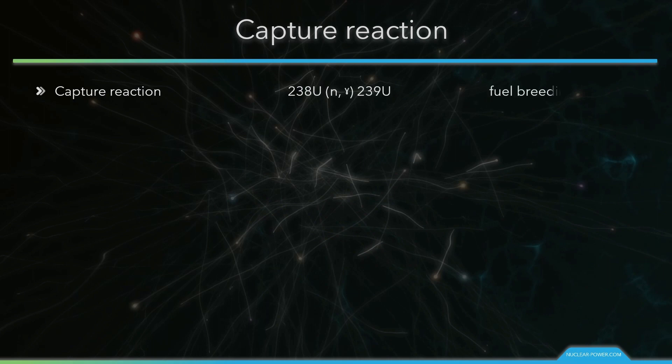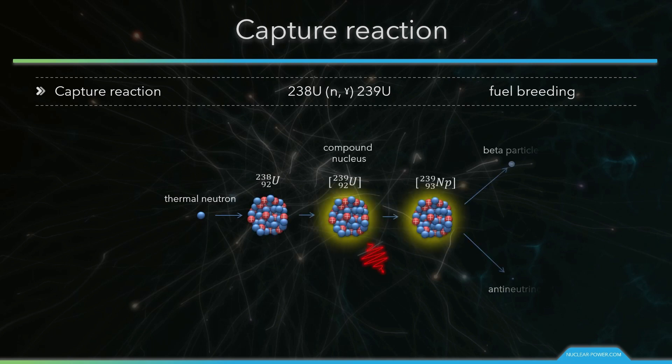The capture reaction is one of the two possible absorption reactions that may occur. Capture reactions result in the loss of a neutron coupled with the production of one or more gamma rays. The resulting nucleus may also undergo a subsequent decay, such as beta decay in this example, which is a very important reaction in nuclear fuel.